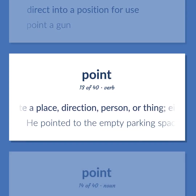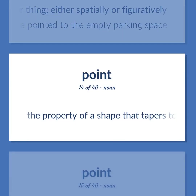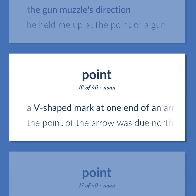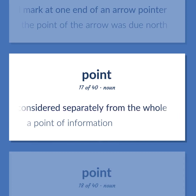Direct into a position for use — point a gun. Indicate a place, direction, person, or thing, either spatially or figuratively — he pointed to the empty parking space. The property of a shape that tapers to a sharp tip. The gun muzzle's direction — he held me up at the point of a gun. A V-shaped mark at one end of an arrow pointer — the point of the arrow was due north. An isolated fact that is considered separately from the whole — a point of information.